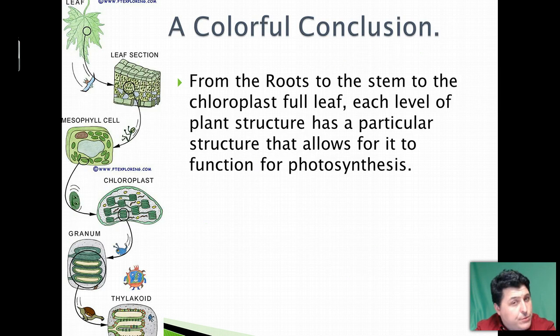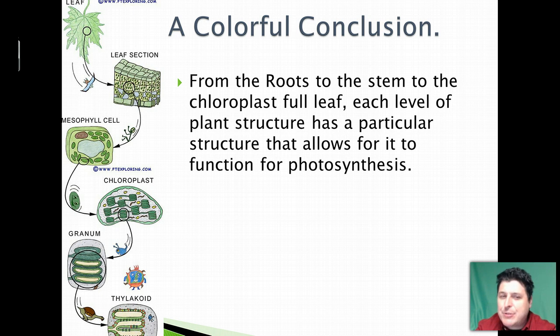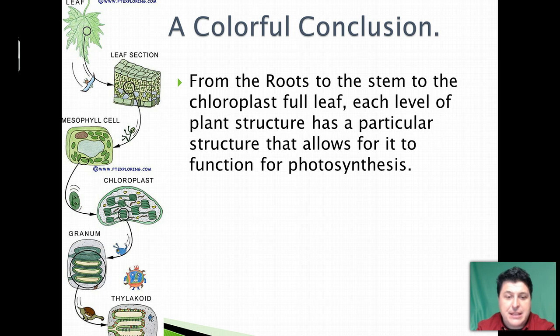So from the roots to the stem to the chloroplast-full leaf, each level of the plant structure has a particular way to function in order to complete photosynthesis.